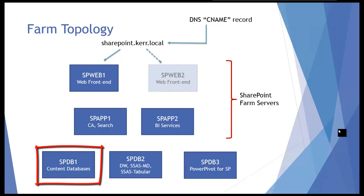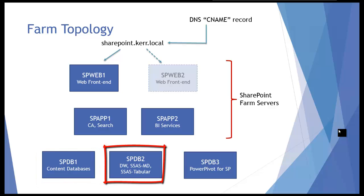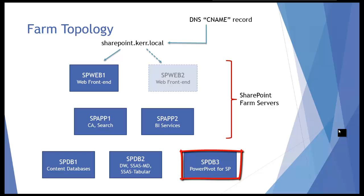SBDB1 holds the SharePoint content databases — SharePoint essentially owns that database instance on its own VM or server. SBDB2 has the data warehouse and a multidimensional Analysis Services instance, along with a tabular instance of Analysis Services — that's the core BI server for the organization. SBDB3 is a dedicated server for PowerPivot for SharePoint, which — unlike SharePoint 2010 — will not be part of the SharePoint farm itself, but will be a standalone database server used by the farm to run PowerPivot workbooks, essentially Analysis Services in SharePoint mode.